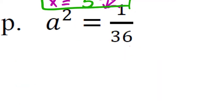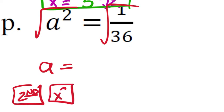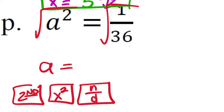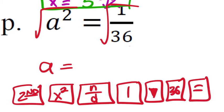Part P: a²=1/36. Since it's a power of 2, use the calculator. Press Second, then x². Since we're working with a fraction, press the n/d button, type 1 in the numerator, press the down cursor, type 36 in the denominator, then press Enter. The calculator gives 1/6. You can verify: (1/6)×(1/6)=1/36. So a=1/6.